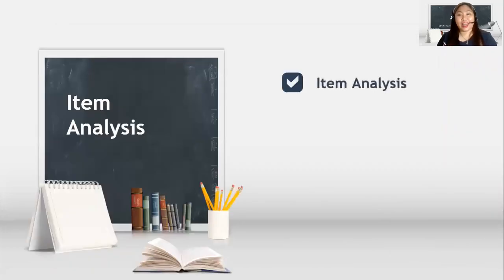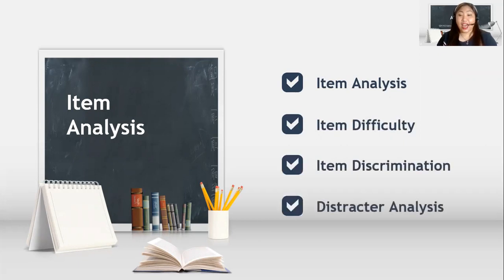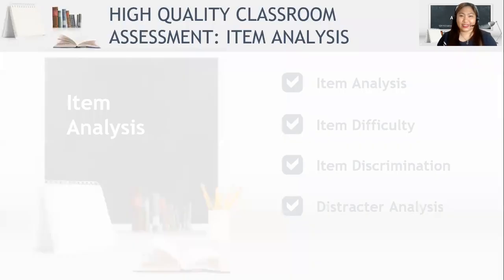In item analysis, there are four key words that we have learned: item analysis, item difficulty, item discrimination, and distractor analysis.